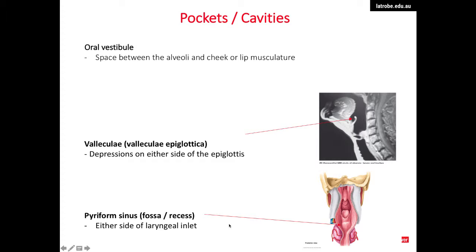There are several pockets and cavities in the pharyngeal region where food particles can get stuck. The oral vestibule is the area between the lateral side of the teeth and the cheek. The valleculae epiglottica are depressions on either side of the epiglottis where food particles can reside. The piriform recess or piriform fossa is located at the side of the laryngeal inlet and can also hold food particles during swallowing.